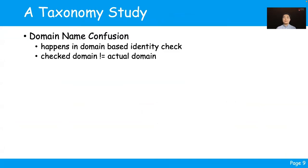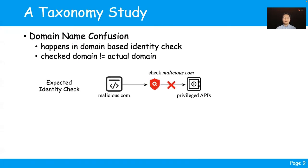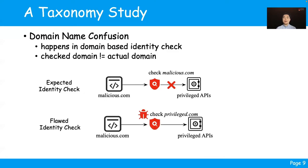Due to the time limit of this presentation, we are going to focus only on the first type of confusion: domain name confusion. When a super app performs a domain-based identity check, it is expected to fetch the domain of the current API caller and check whether it is in a privileged domain whitelist. As expected, malicious.com won't be allowed to call a privileged API. However, in a flawed identity check, malicious.com can borrow the identity of privileged.com to bypass the check and escalate its privilege.